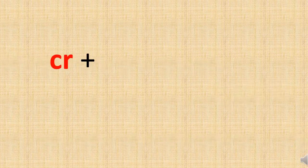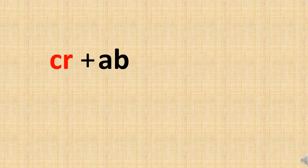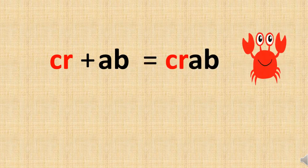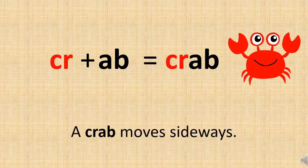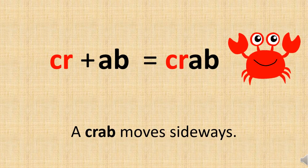Now we will see new words with the cr sound. Here cr is already given, and I am going to add -ab with that. And I will get a new word: crab. Ready to make a new sentence with the word crab? A crab moves sideways.